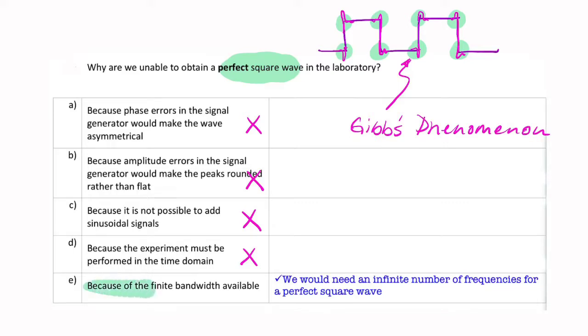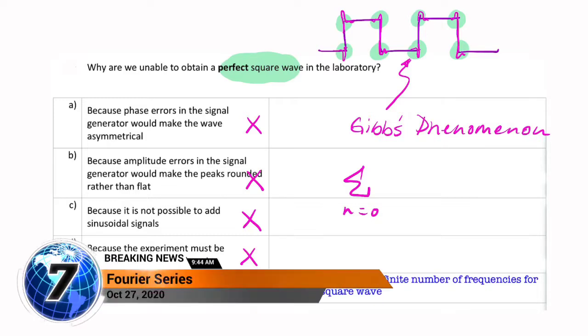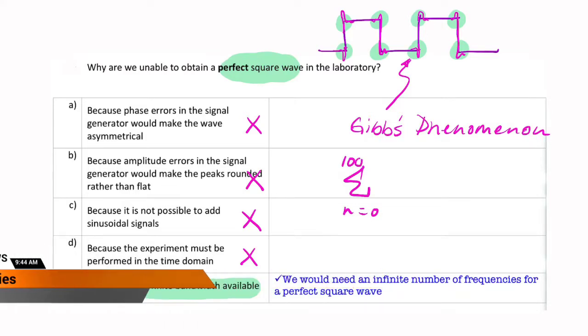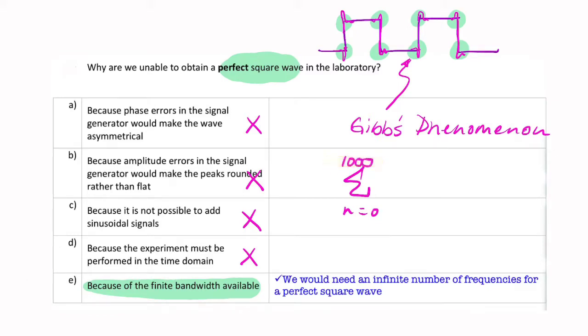So here it is: because of the finite bandwidth available. Finite means limited, so it's not infinite. It means we're only able to add a finite number, from N to for example 10 or 100 or 1000, but whatever it is, that is finite. So we don't have an infinite number of components to add.